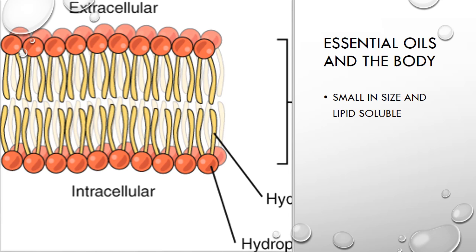This is a picture of our cell membranes. Since our cell membranes are made up of a type of fat, and essential oils are also a type of fat, essential oils are able to pass through the lollipop-like phospholipid structures and into the cell — meaning they can actually affect the cells directly.